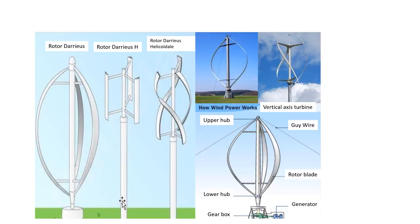The vertical axis wind turbines, or VAWTs, have the main rotor shaft arranged vertically. One advantage is that the turbine does not need to be pointed into the wind to be effective, which is an advantage on sites where the wind direction is highly variable. It is also an advantage when the turbine is integrated into a building because it is inherently less steerable.